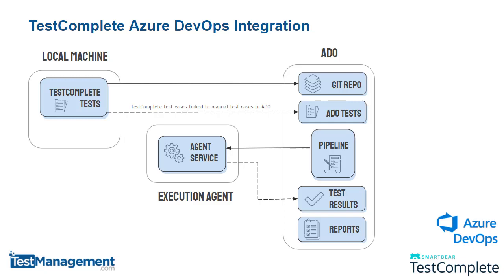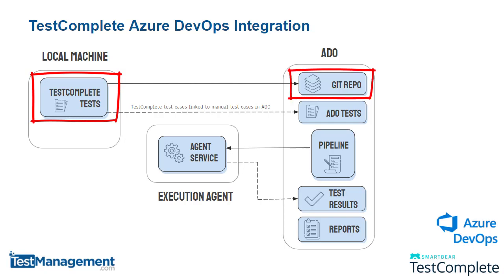Let's have a look at how we can integrate TestComplete with Azure DevOps. The end-to-end process we're going to build and run is based on this workflow. You write your TestComplete tests on your local machine, create a Git repository in your ADO instance, and commit that TestComplete project to the repository in ADO.